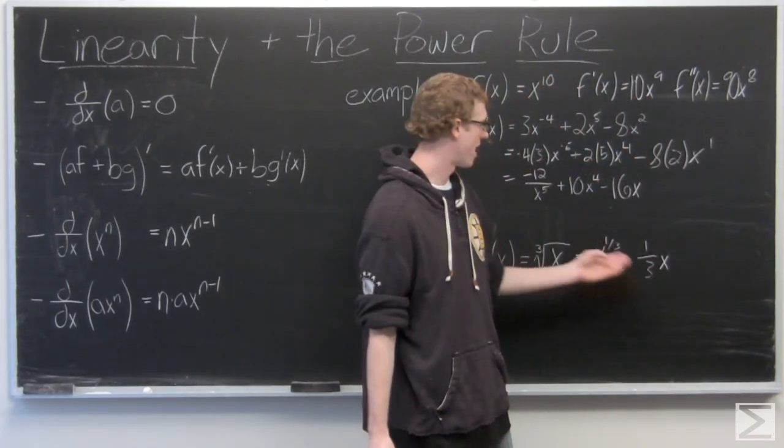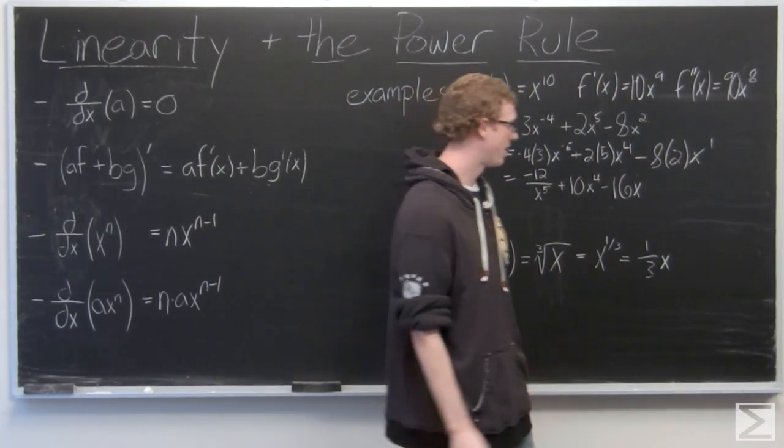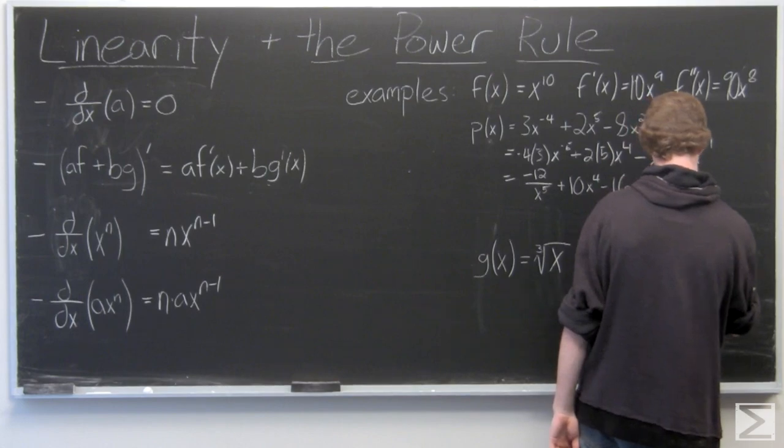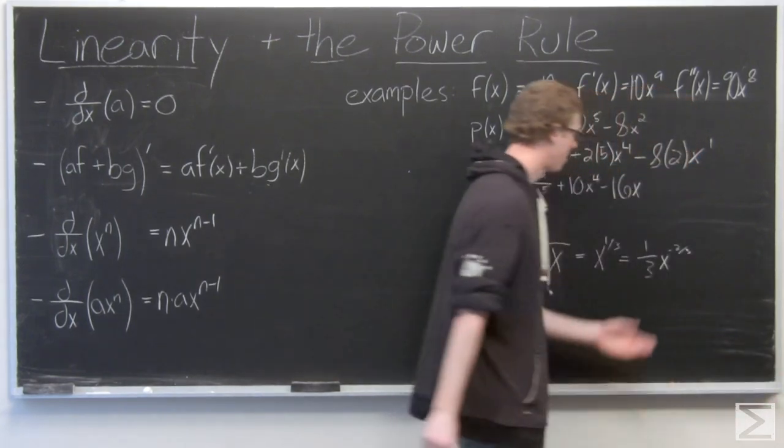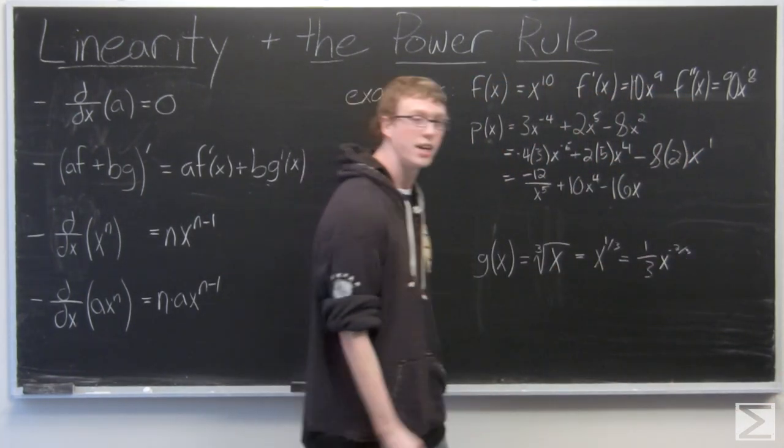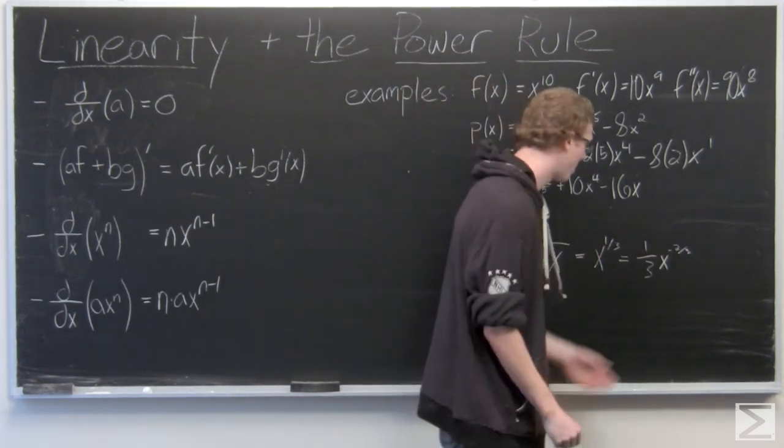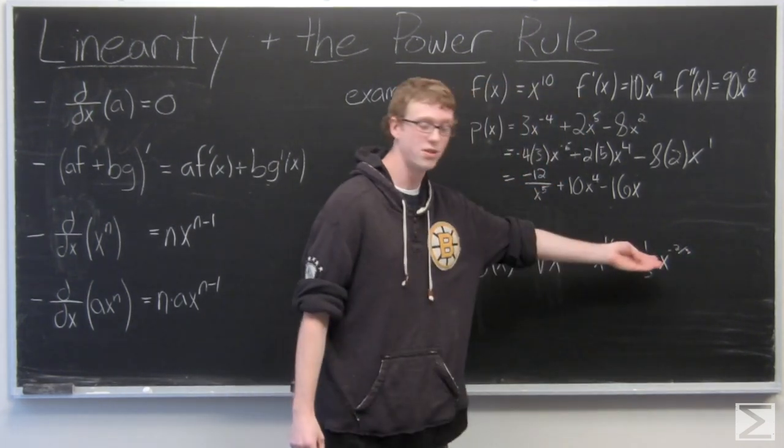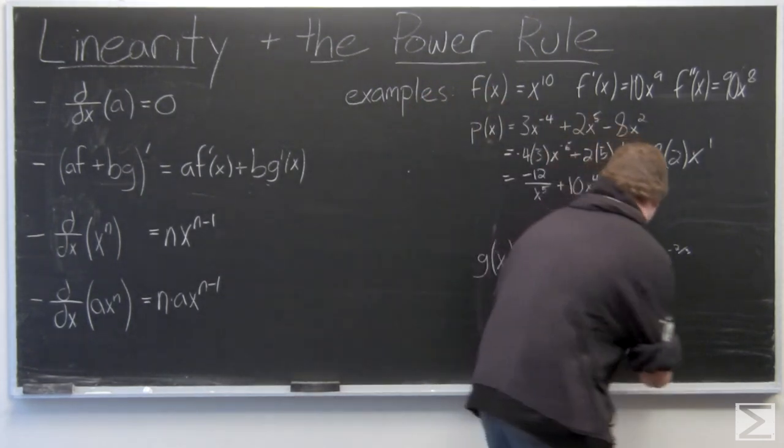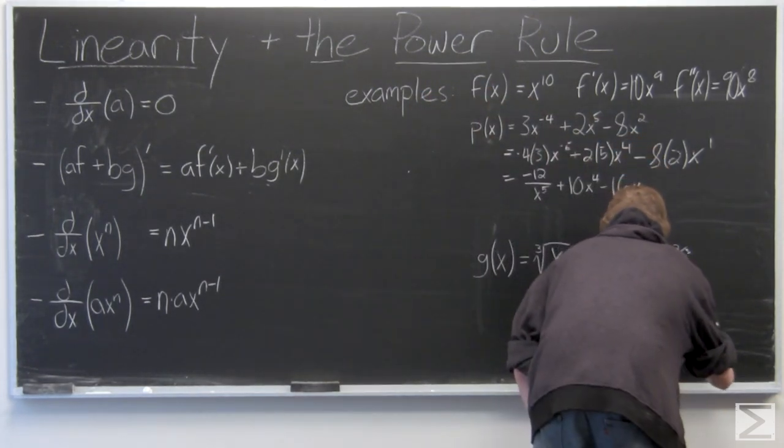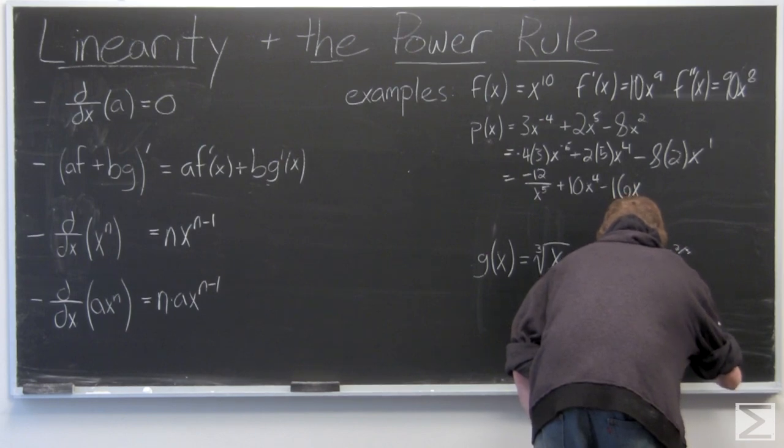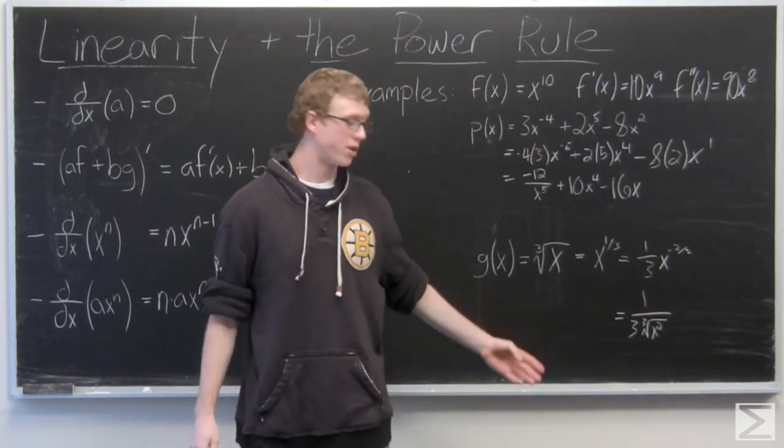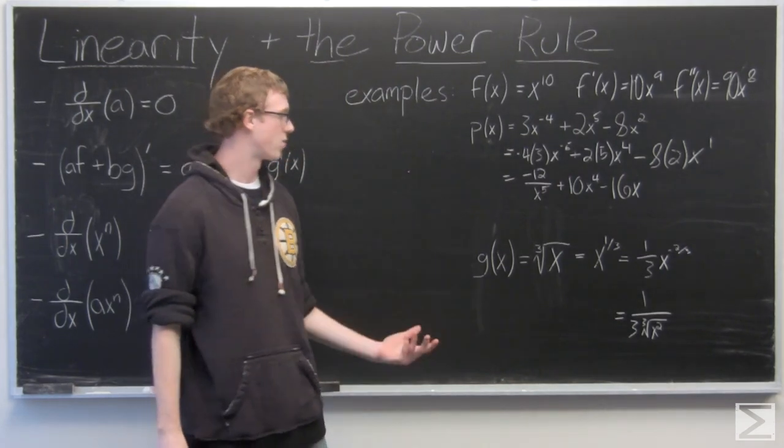And we have 1 third x, and 1 third minus 1 is negative 2 thirds. Now we could elaborate on that and put the x to the negative 2 thirds in the denominator and replace the negative 2 thirds with a radical.